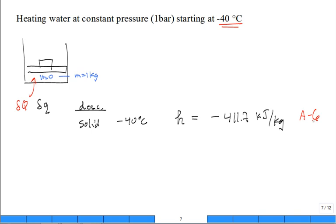For this first law analysis of a small chunk of mass: ΔQ - ΔW = ΔU. We're doing constant pressure heating, so W combines with ΔU to become ΔH, giving ΔQ = ΔH. As you heat the sub-cooled solid, the enthalpy increases but it stays solid until it approaches the saturation point. Before it melts, it's a sub-cooled solid — you have to warm it up before it starts to melt.